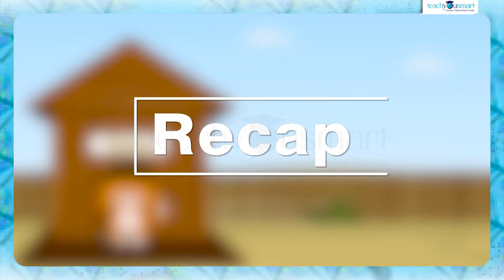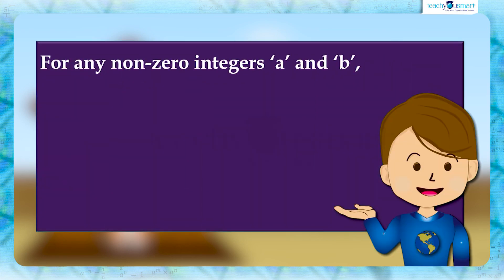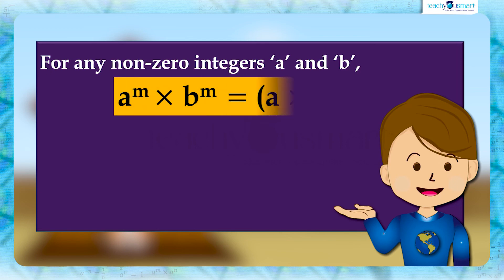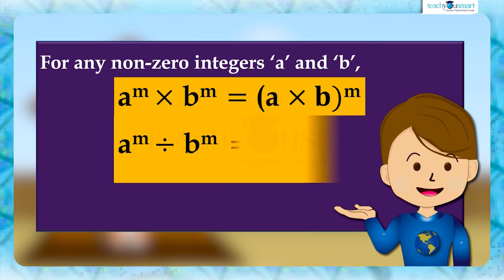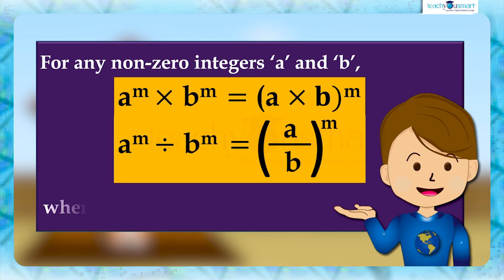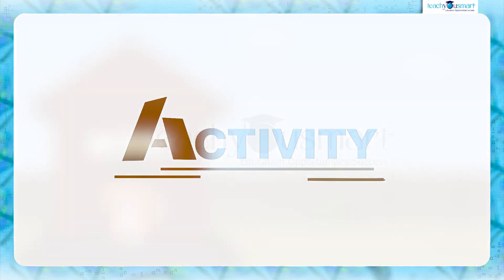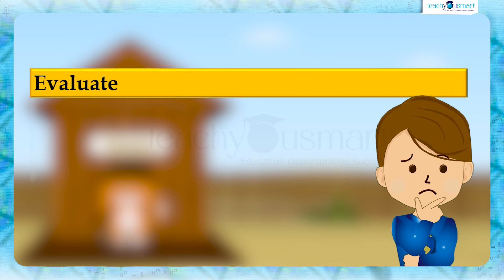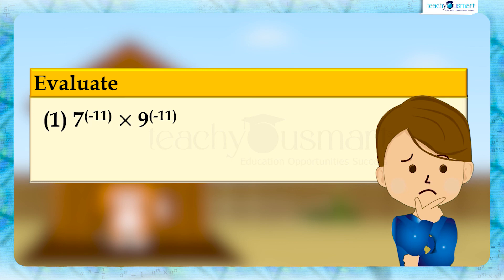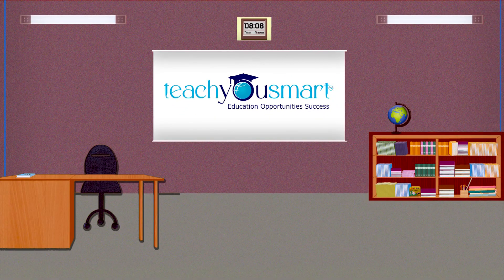Let's recall what we discussed today. For any two non-zero integers a and b: a^m × b^m = (a × b)^m, and a^m divided by b^m = (a/b)^m, where m is an integer. Before winding up, let's do an activity to check how much you understood. Evaluate: first, 7 raised to minus 11 multiplied by 9 raised to minus 11; second, 27 raised to minus 2 divided by 81 raised to minus 2. That's all for now — see you all in the next class.